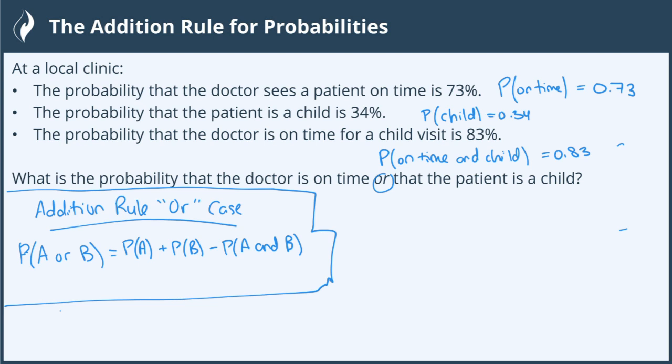And I hope you can determine that this is exactly directly from this formula. We have, let's say in place of A, we'll say on time. So this is like saying P of A, probability that he's on time. We'll say B represents the patient being a child. So we want the probability of the doctor being on time or the patient is a child. Probability of A or B. I'm going to say on time or child. So this is kind of how I set it up.